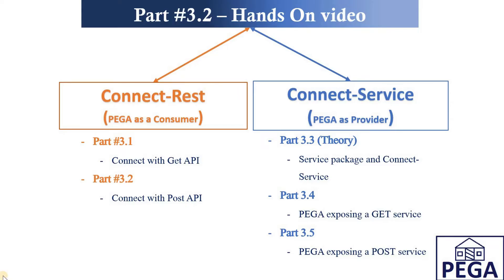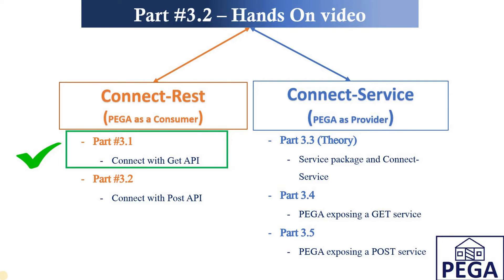Welcome to REST API series part 3.2. What we have covered so far: we have finalized the API basics in part 1 and 2, and we also finished how Pega connects with GET API using Connect REST in part 3.1. Today we are going to discuss how Pega integrates with a POST API which expects a request body to be passed, and we'll explain how it is different from consuming a GET API. I strongly recommend watching parts 1, 2, and 3.1 before this one. So without further ado, let's get into it.